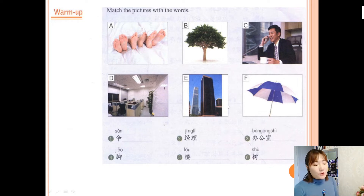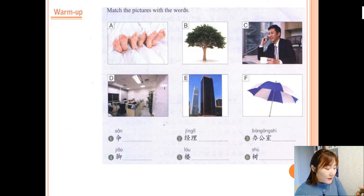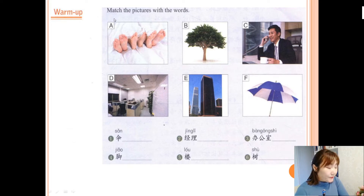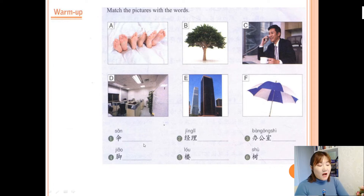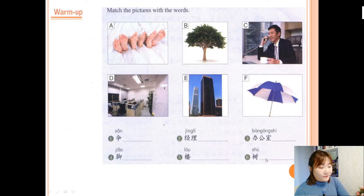If you do not know how to pronounce these, please follow my pronunciation and just practice. Practice more — that helps you to pronounce well. 交, third tone. We need to choose A. Next: 楼, that means building, so we choose E. And sixth: 朱, choose B. So the answers are F, C, D, A, E, and B.